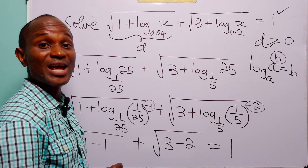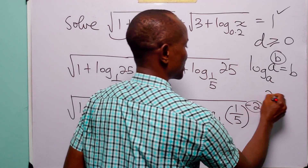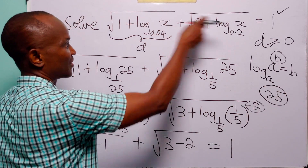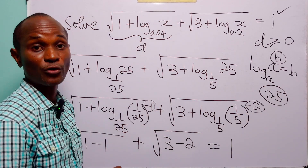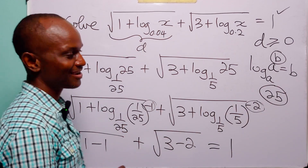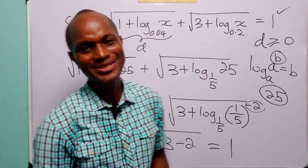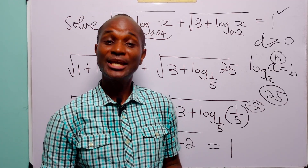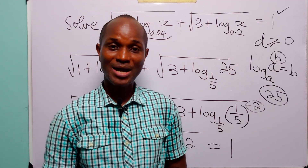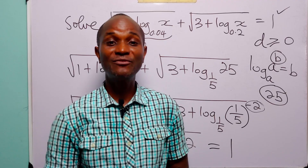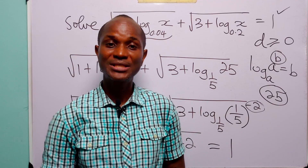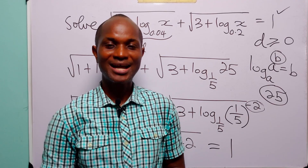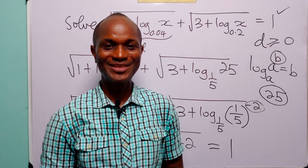So the value of x that satisfies the given logarithmic equation is x equals 25. With that we come to the end of today's tutorial. I hope you learned something new. If you enjoy such content, please subscribe to the channel, leave us a like to support the channel, leave a comment if you have one, and see you in the next video.